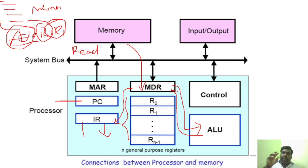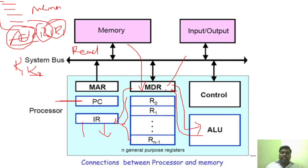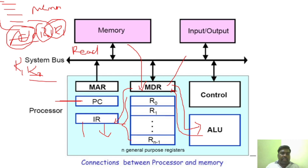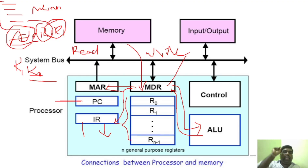The result is held in MDR. If there is immediate use in the processor, it can be given to an output device. If you want to store the result back to memory — for example, storing R0 — MDR sends the result and the address location to MAR, and initiates a write cycle. At the end of the write cycle, the result is stored in the corresponding memory location.